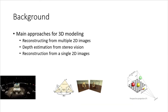There are three main approaches to construct a 3D model from images. First, we can reconstruct a 3D model by using one single camera and capturing multiple pictures of a given object at various angles — for example, rotating the camera around a car to reconstruct its 3D model.